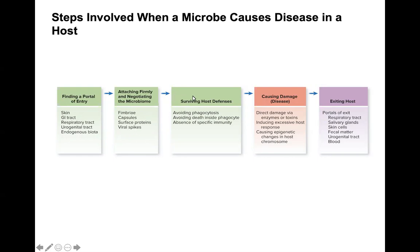The third step is surviving host defenses. This involves avoiding processes like phagocytosis or death inside a phagocyte, absence of specific immunity, and evading the host's both innate and adaptive immune responses.